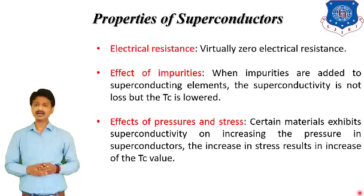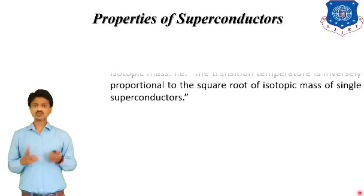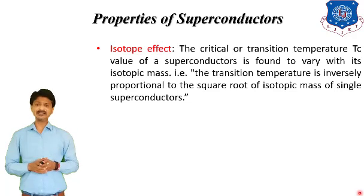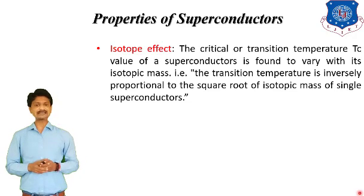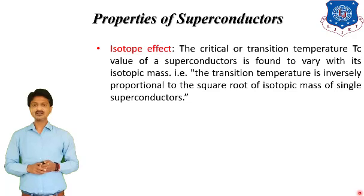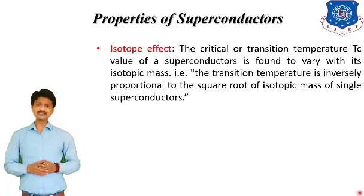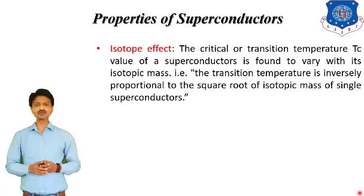The next property is the isotope effect. Isotope means the atomic number of a material is the same but they have different atomic masses. The critical or transition temperature of a superconductor is found to vary with its isotopic mass. The critical temperature depends on the variation of isotopic mass — specifically, the transition temperature is inversely proportional to the square root of the isotopic mass of the superconductor.